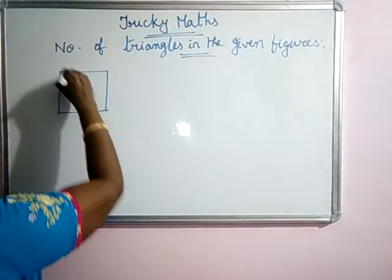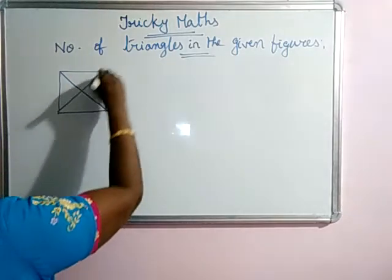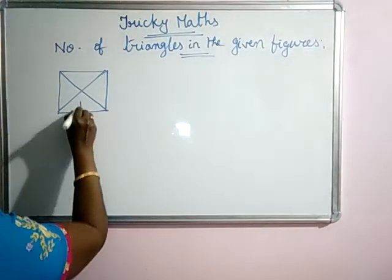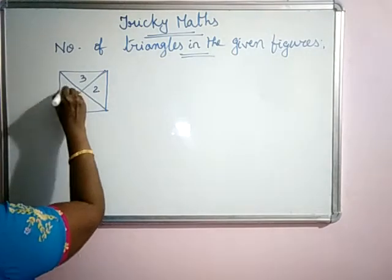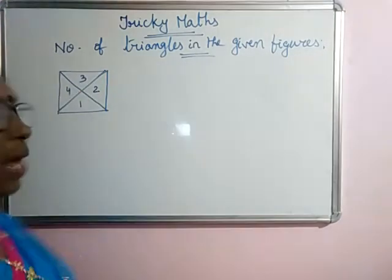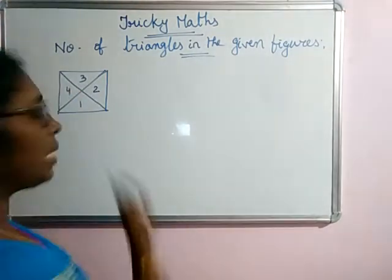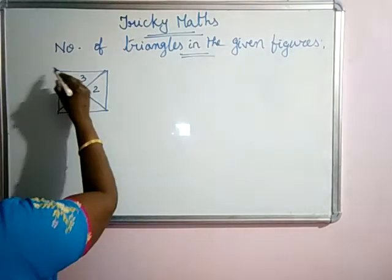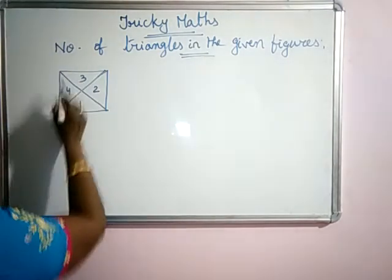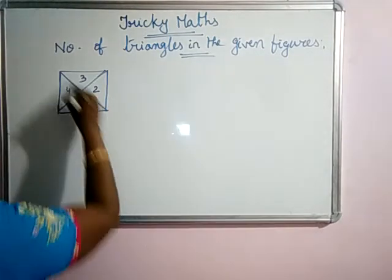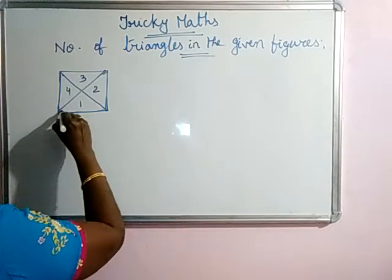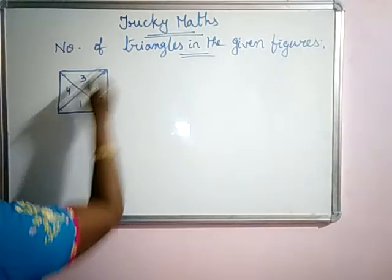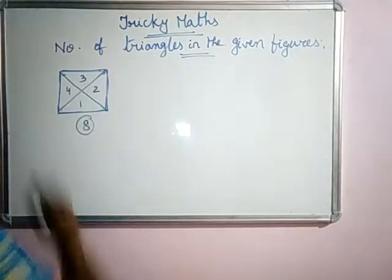This is a square. It is divided into 4 triangles — 1, 2, 3, 4. How many triangles are there? In this figure, the small triangles are 1, 2, 3, 4, and then one more is 5, one more is 6, then 7, and this is 8.